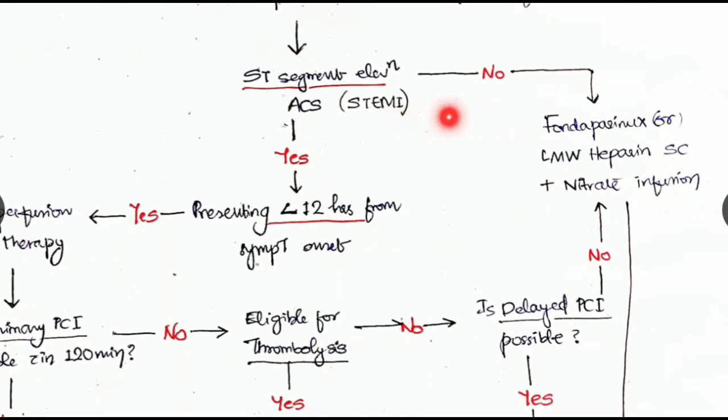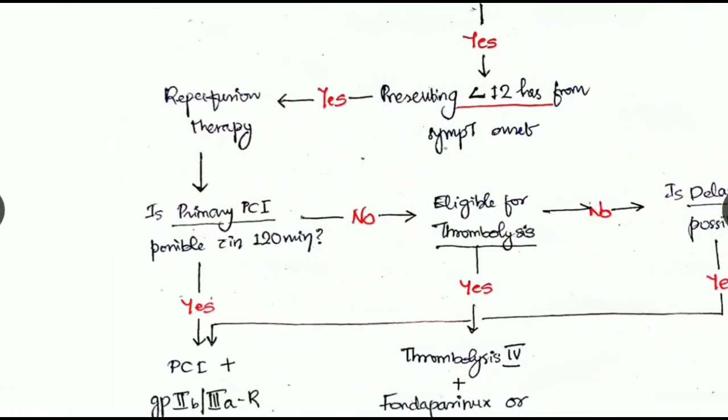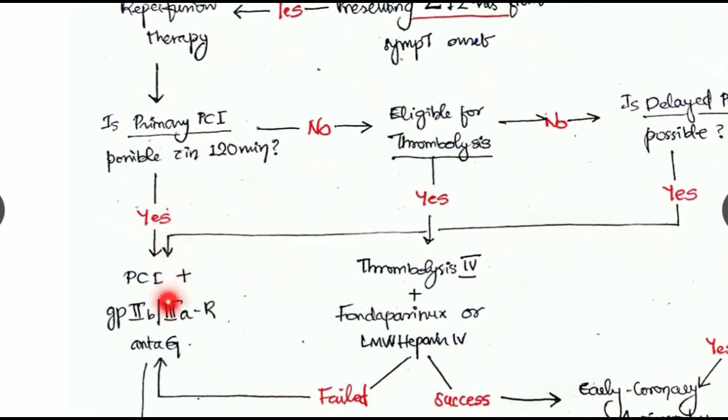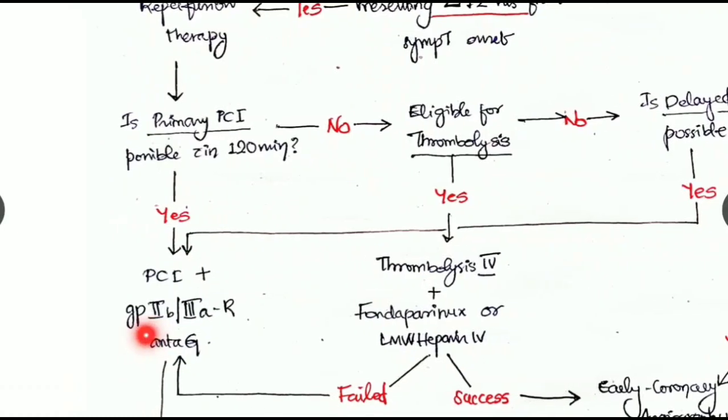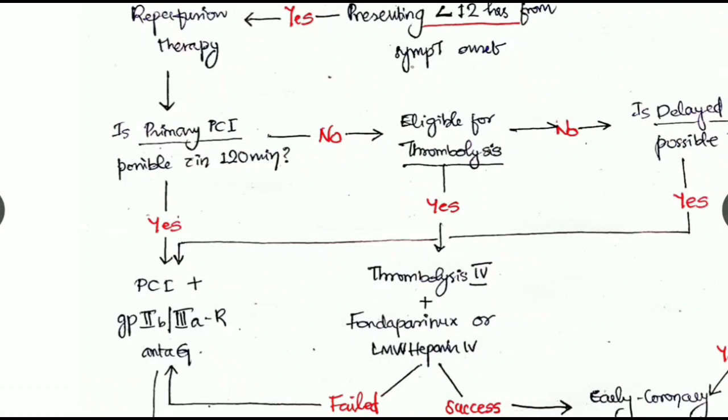If it is not an ST segment elevation MI, then go for fondaparinux or any low molecular weight heparin subcutaneously with nitrate infusion. In reperfusion therapy, check whether the primary percutaneous coronary intervention is possible within 120 minutes or not. If yes, then go for the PCI combined with GP2b3a receptor antagonist like abciximab.